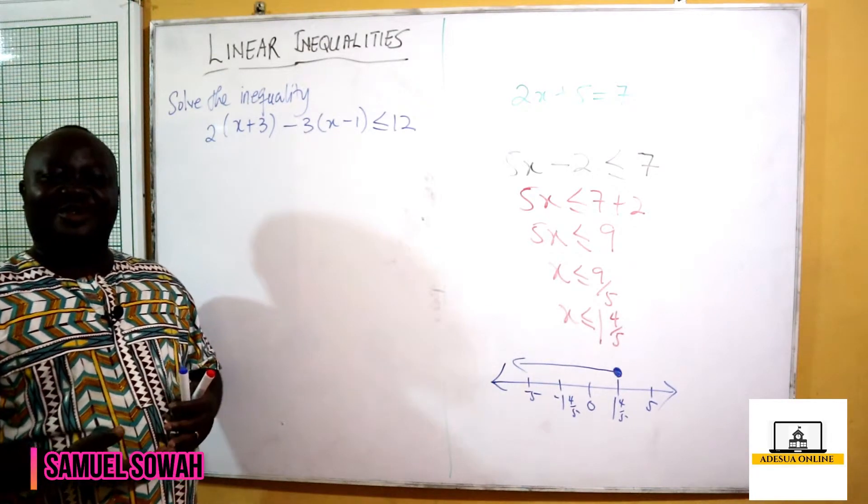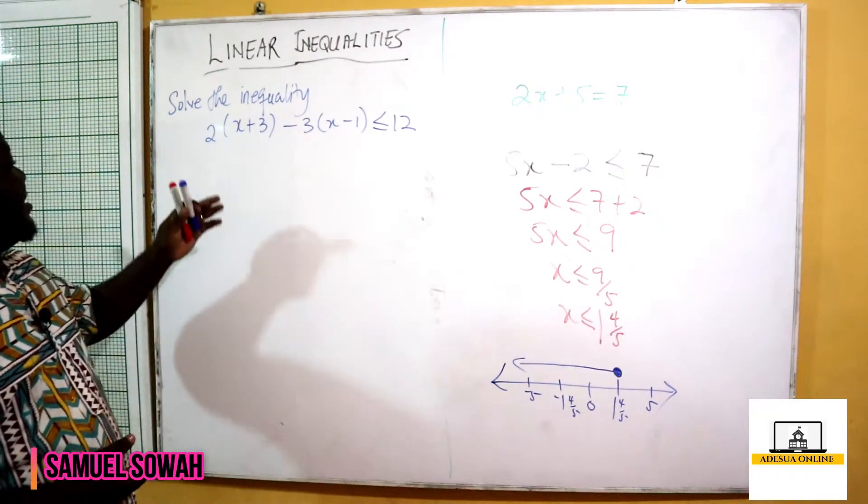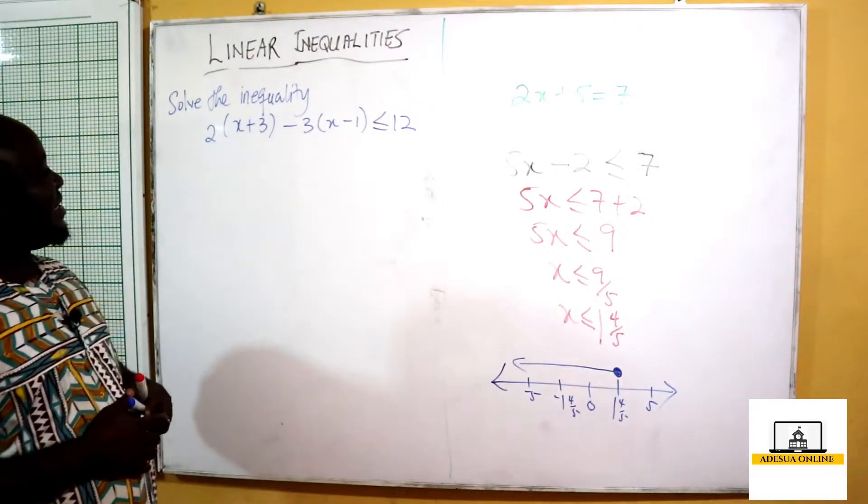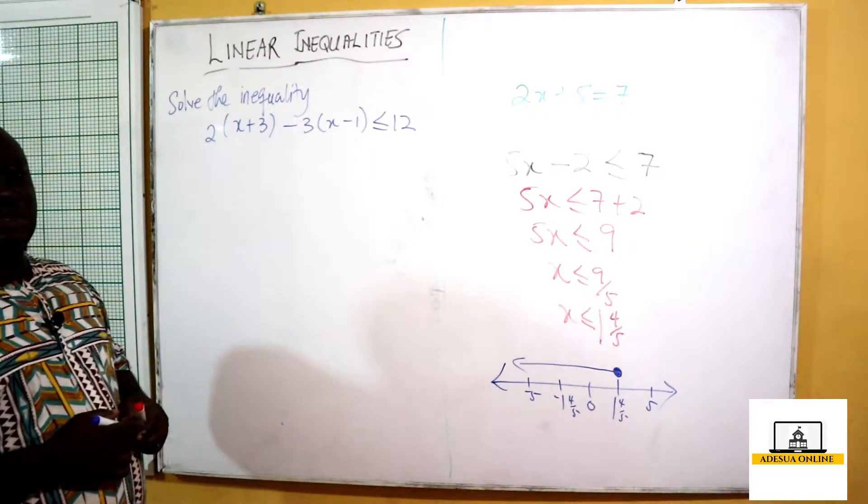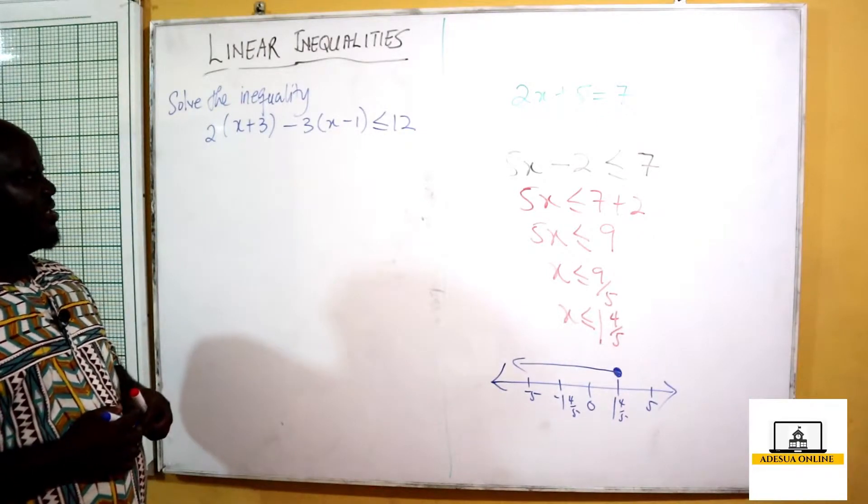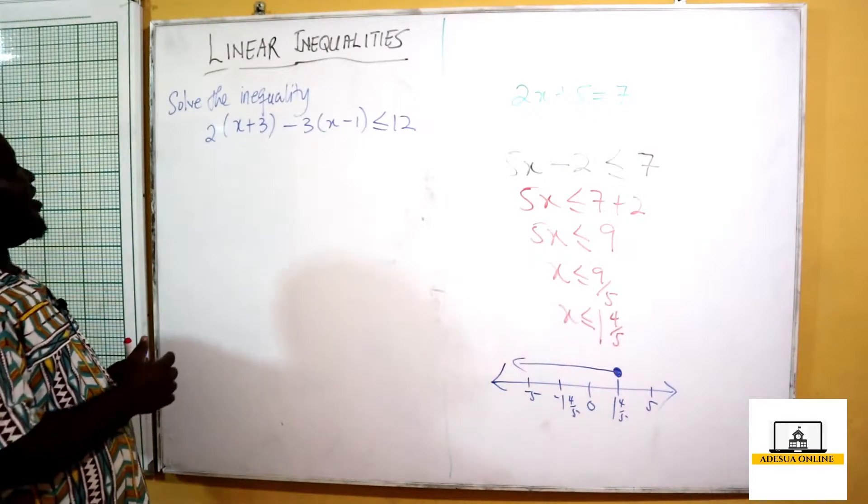We have been asked to solve the inequality 2(x+3) - 3(x-1) ≤ 12. First, we are going to remove the brackets by expanding.